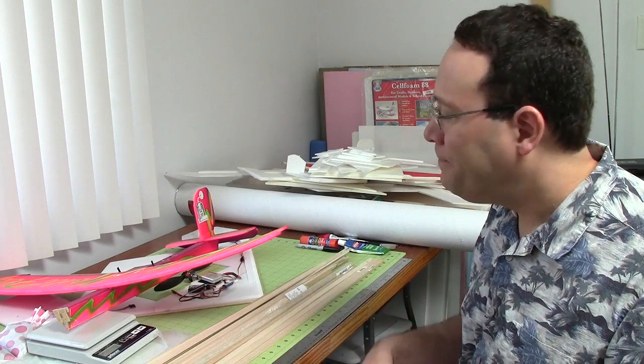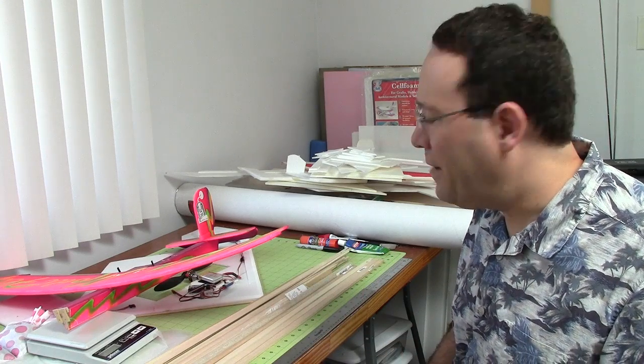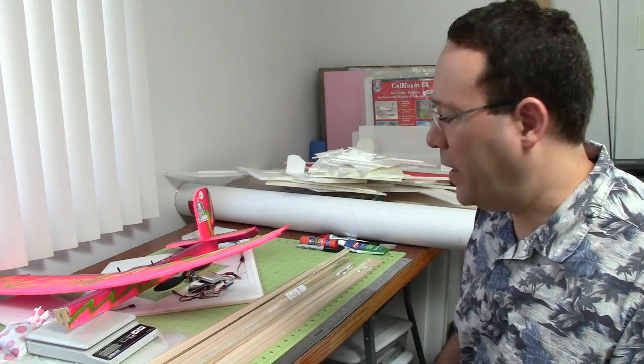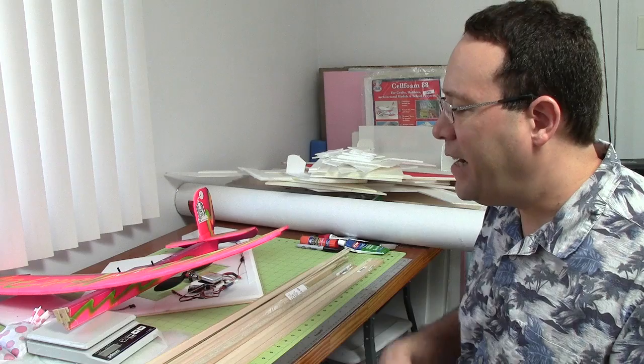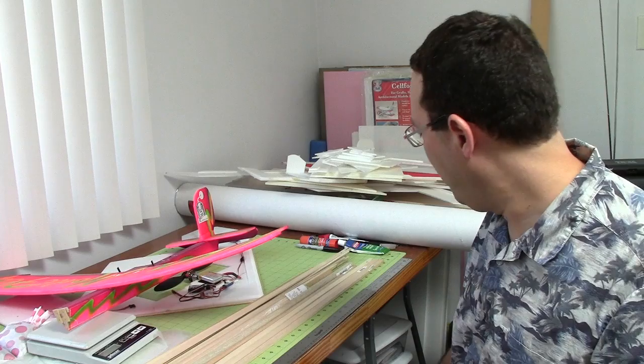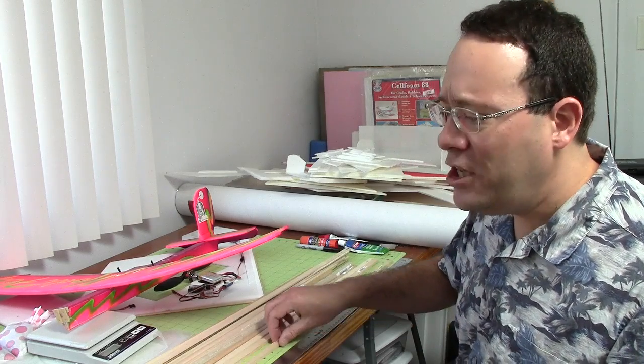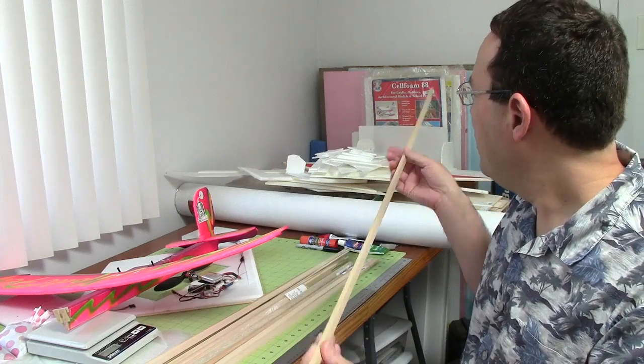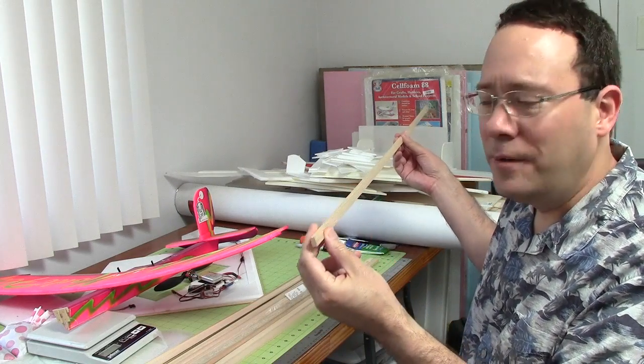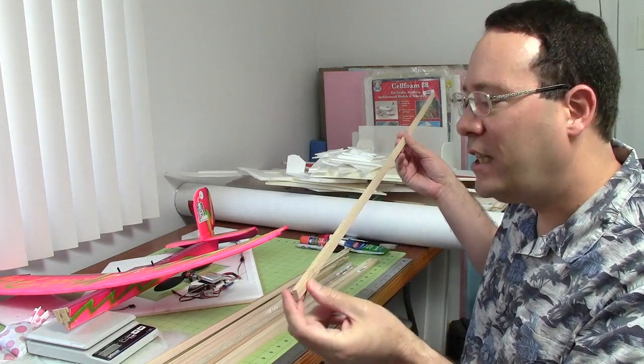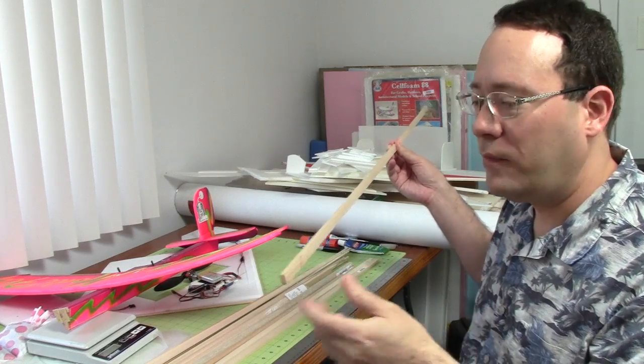But then I said, hmm, it's not really the best design I can come up with. And so I started thinking about spars and beams and structures and all of that. And my thought was to put this in the airplane vertically, it's about half an inch and then basically surrounded with foam. And that's okay.